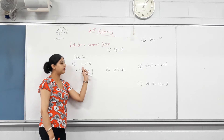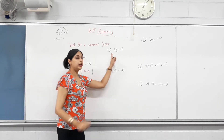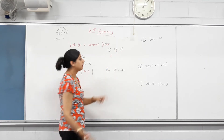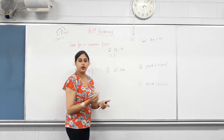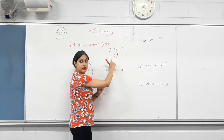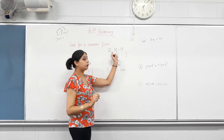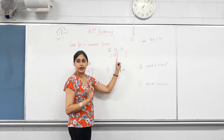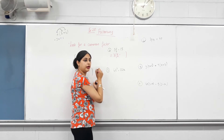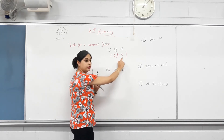Next one: 3f − 15. The highest common factor of 3 and 15 is 3. Are there any letters common to both terms? No. So only 3 goes outside the bracket. Inside: 3f divided by 3 — three divided by three is one, and f remains, giving f. Then negative 15 divided by 3 is negative 5. So the answer is 3(f − 5). And we can check: if we expand it we get 3f − 15, our original answer.